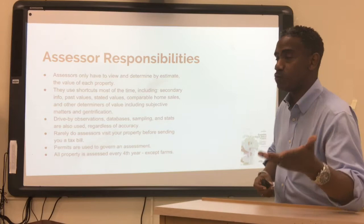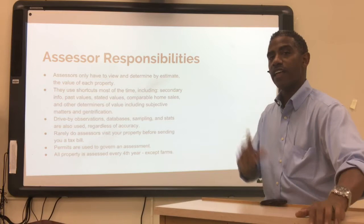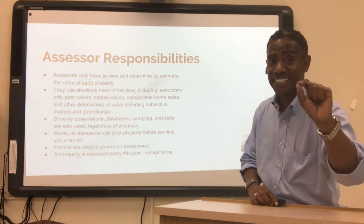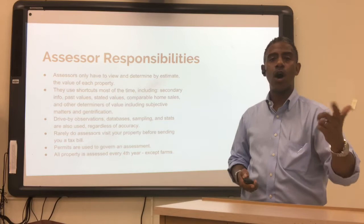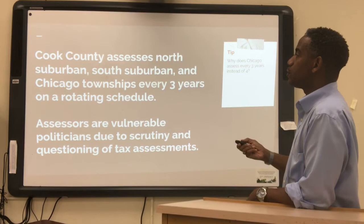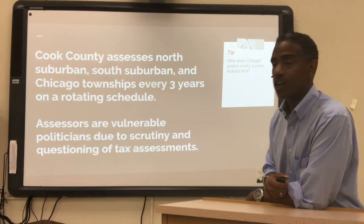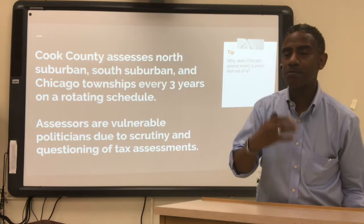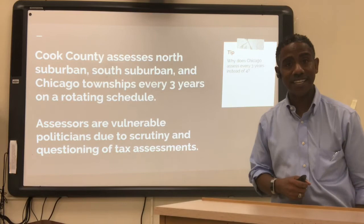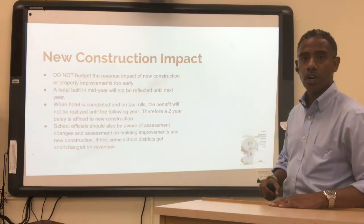Interestingly, when people are selling their house they want the highest assessment, but when it's time to pay taxes they want the lowest assessment. All property is assessed every fourth year, except for farms. Cook County assesses North Suburban, South Suburban, and Chicago townships every three years on a rotating schedule. Assessors are vulnerable politicians due to scrutiny and questioning of tax assessments — this is why you always see tax assessment in the news. Why does Chicago assess every three years instead of four? Something to think about.